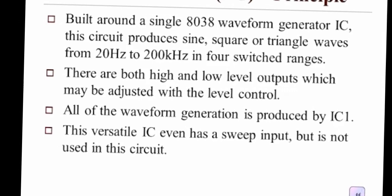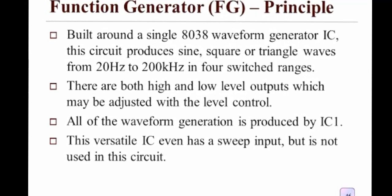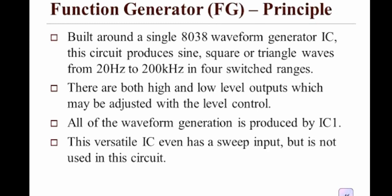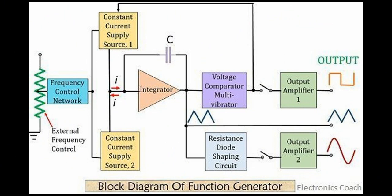Further, we have a part of the cathode ray oscilloscope, which is a function generator. Its principle is that it is built around a single 8038 waveform generator. This circuit produces sine, square, or triangular waves from 20 Hertz to 200 kilohertz. This diagram shows the function generator with frequency control, constant current supply to the integrator, voltage comparator multivibrator, output amplifier number one, and constant current supply source two which produces output amplifier two.